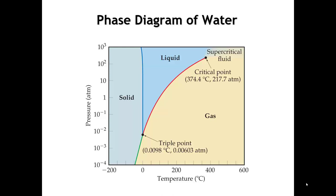The degrees of freedom cannot be less than 0, so nowhere on the phase diagram can we have more than 3 phases at equilibrium. Where we do have 3 phases in equilibrium is the triple point, where degrees of freedom equals 0. We cannot move off this point without disturbing the equilibrium. At the opposite extreme, somewhere in the solid phase with only one phase present, the degrees of freedom becomes 3 minus 1, giving 2 degrees of freedom — we can change either pressure or temperature independently and still maintain just the solid phase.